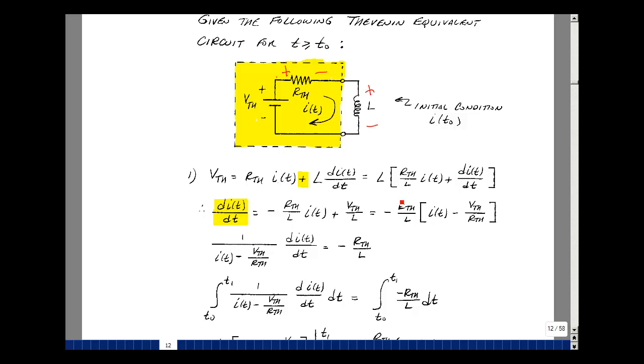Let's further pull out this R_Thevenin over L, you see here, with a minus sign. So I've just got I(t) left over. I have a V_Thevenin, I do have an L, but I don't have an R_Thevenin, so I'll have to put one back in, and then a minus sign. So when I multiply this out, it gets just V_Thevenin over L. Now divide by this term over here.